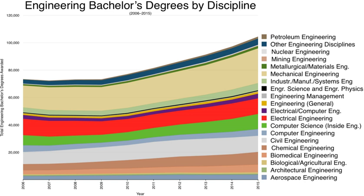Engineering degrees in Canada are distinct from degrees in engineering technology, which are more applied degrees or diplomas. An engineering education in Canada is held in very high esteem, culminating in qualifying as a professional engineer licensee. Many graduate engineers enter other areas of professional practice including management consulting, law, medicine, and business administration.